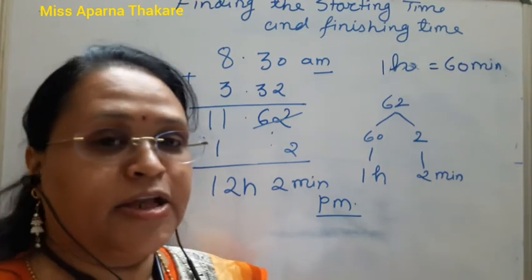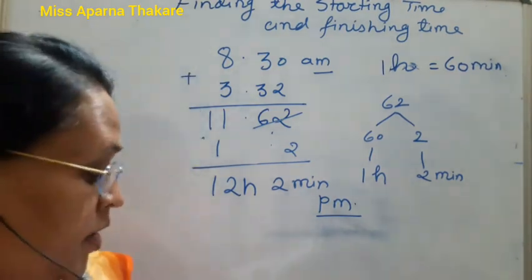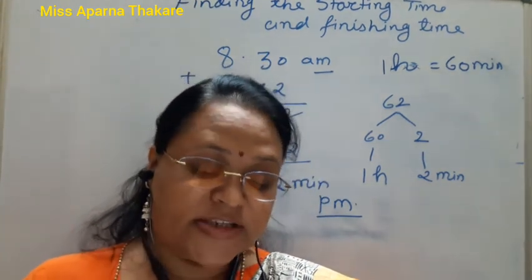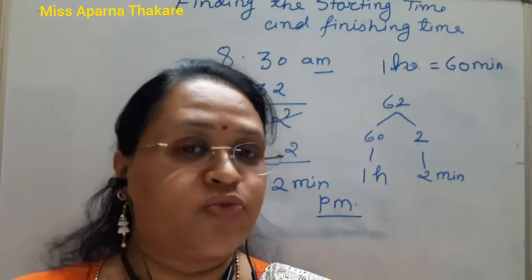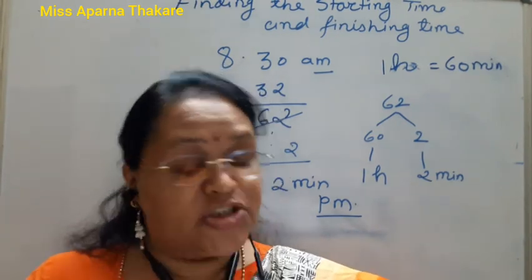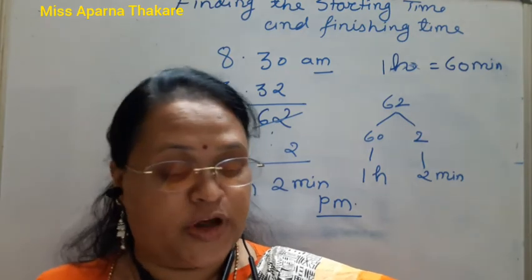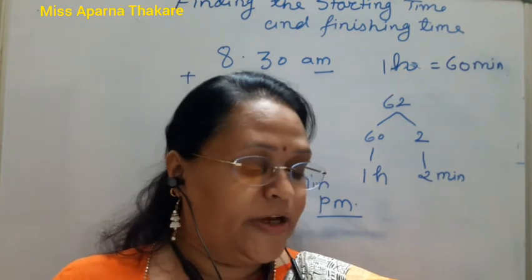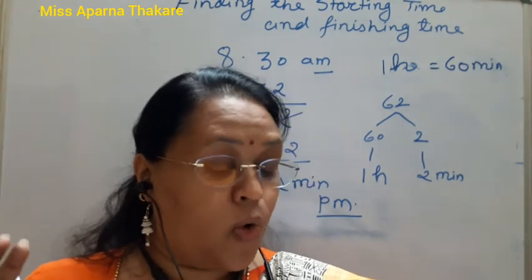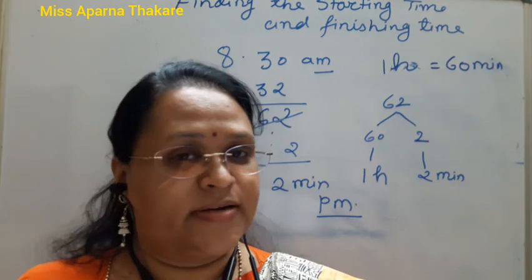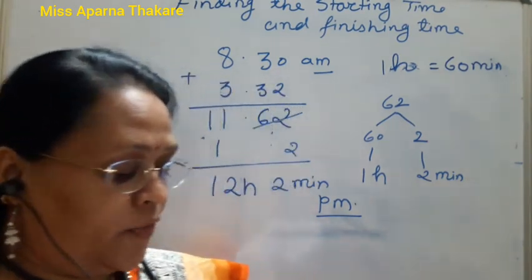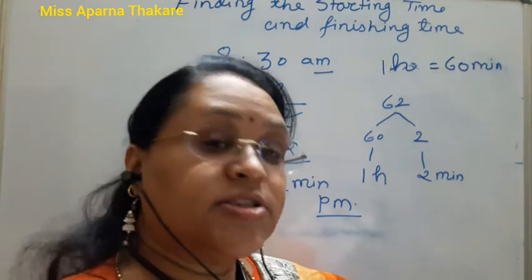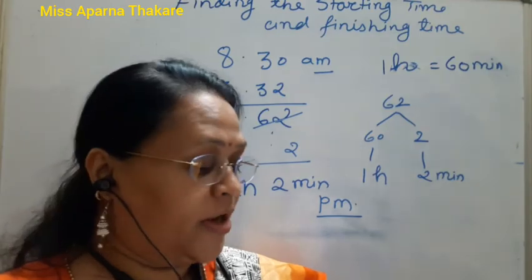Now we look at finding the starting time. Devish woke up at 7:30 AM after sleeping for 8 hours 45 minutes. What time did he go to bed? Here we have the finishing time and the elapsed time, but not the starting time, so we have to find that.